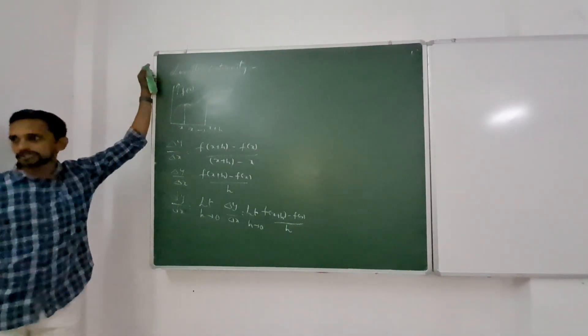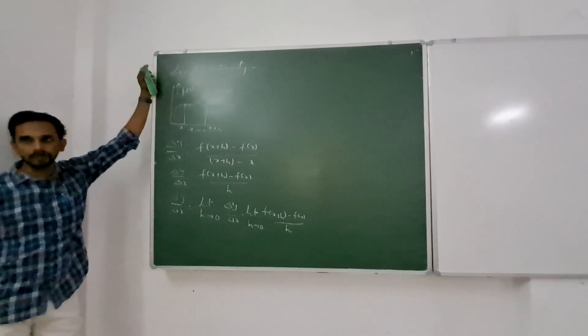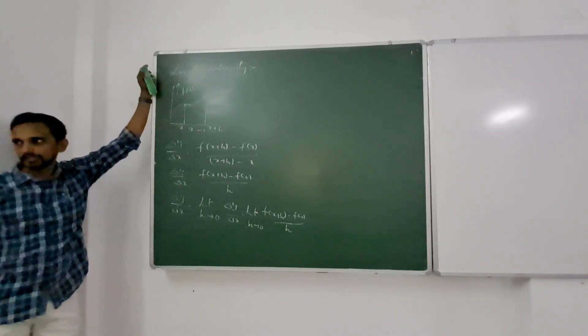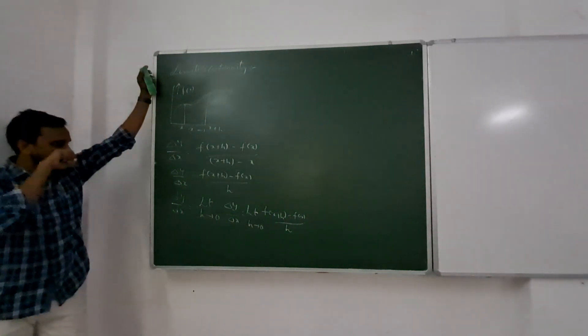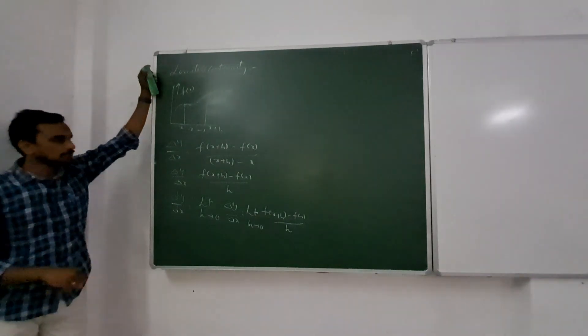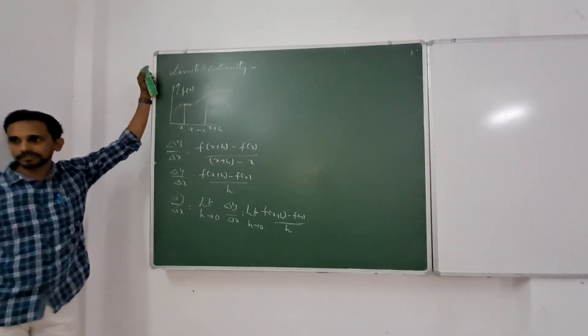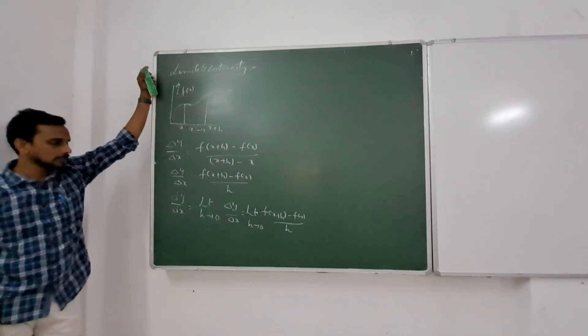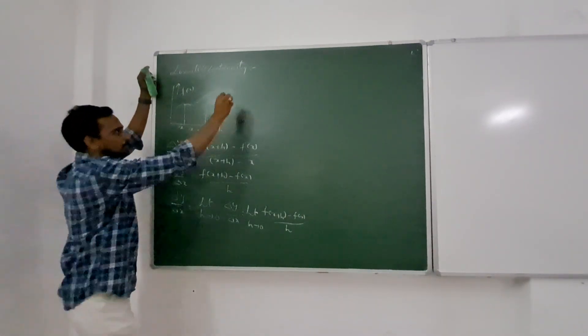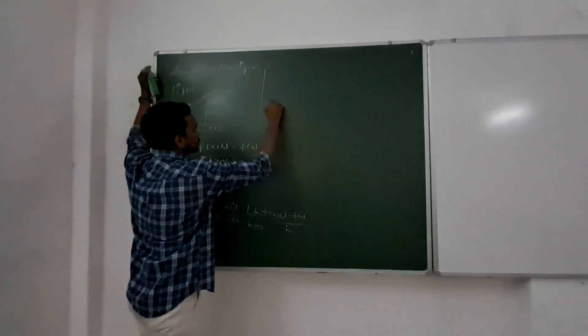So, we have to reduce the interval to a very very small value, so that the two points we are considering are from a very nearby limit. When in the limit h tends to zero, we get the actual information of the system.